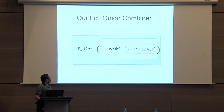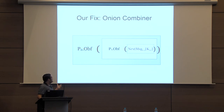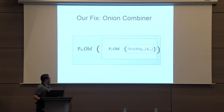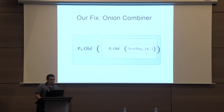The fix is: between every pair of parties i and j, for candidates P1 and P2, we first obfuscate the next message function with PRF key K12 using candidate P1, and then obfuscate it with candidate P2. So if P1 is broken but P2 is secure, the PRF key K12 is still not revealed. This is the basic idea, though there are many other roadblocks in the full construction.